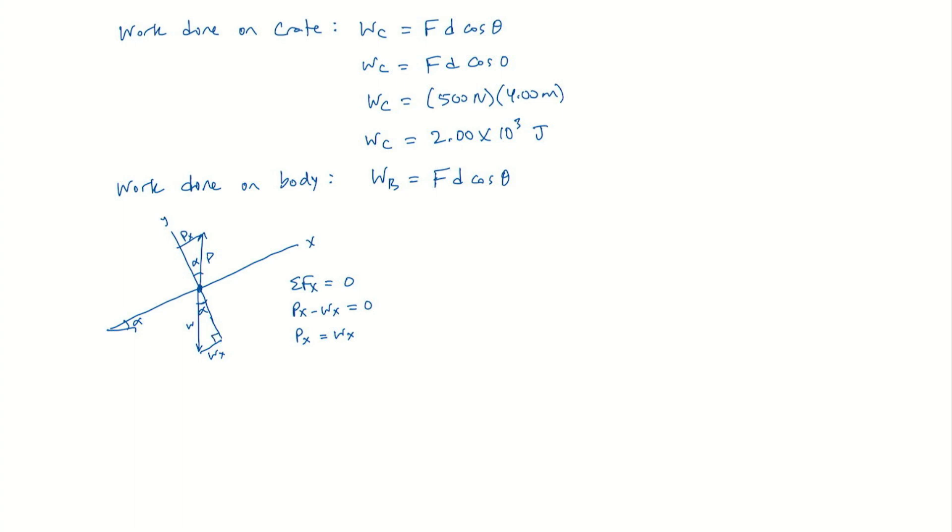We have a right triangle here. So if we take the sine of alpha, we get the X component of weight over the weight. So the X component of weight is weight sine alpha, and so that is mg sine alpha. So the force on the body, the X component of it, is mg sine alpha.